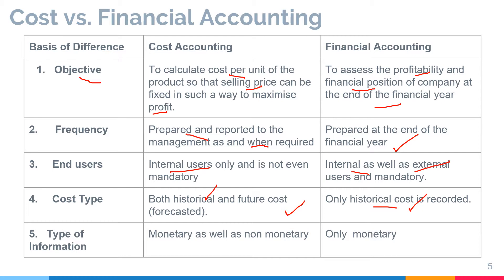The historical cost principle means only historical costs are recorded in financial accounting. In cost accounting, both monetary and non-monetary information is recorded — for example, 20,000 units at rupees 10 equals 2 lakh; cost accounting records the units (20,000), the rate (10), and the monetary value (2 lakh). But in financial accounting, only monetary values are recorded.